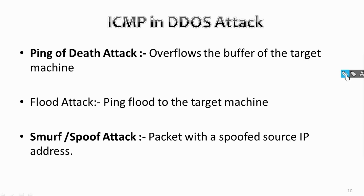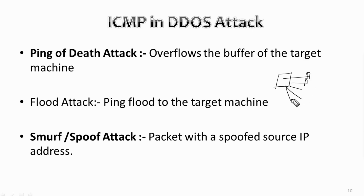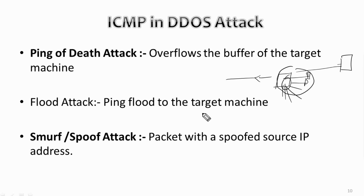Now let's look at ICMP-based DDoS attacks. In a DDoS attack, attackers send so much traffic to a target that it cannot provide service to legitimate users — essentially keeping the server too busy to respond. One method is the Ping of Death attack, where the attacker overflows the buffer of the target machine, preventing it from processing any traffic. Another is the ICMP flood attack, where the attacker sends a ping flood to the target machine, causing it to hang or stop working.